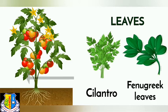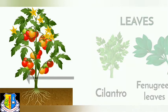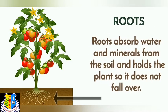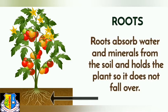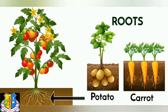Next one is roots. Roots absorb water and minerals from the soil and hold the plant so it does not fall over. Some examples of roots we eat are potato and carrot.